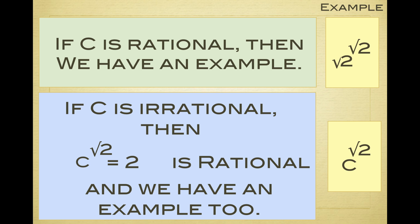c to the square root of 2 to the square root of 2 is c to the power 2, which is square root 2 to the power 2, which is 2. So that's rational. And we have also an example.